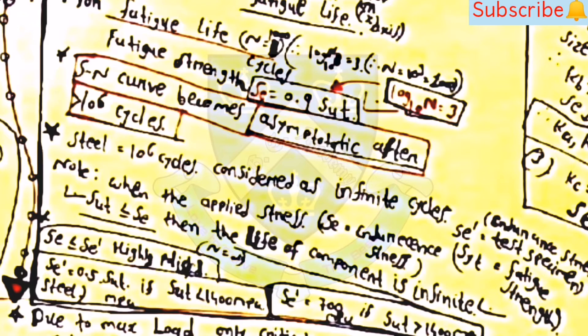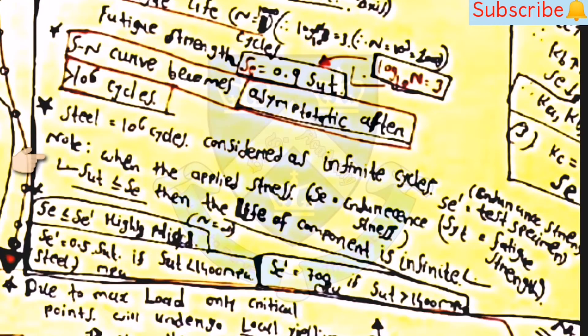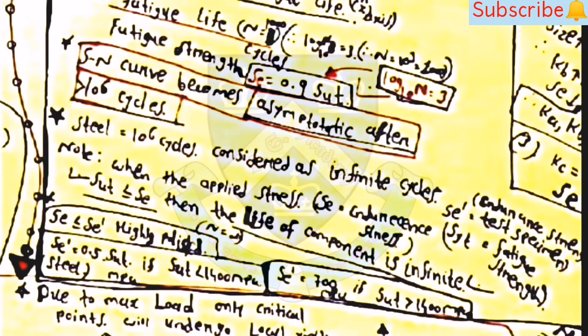The S-N curve becomes asymptotic after N is greater than 10^6 cycles. When the applied stress Sigma is less than or equal to S_e, the life of the component is infinite. S_e is less than or equal to S_e'. S_e' equals 0.5 × S_ut if S_ut is less than 1400 MPa. If S_ut is greater than 1400 MPa, then S_e' equals 700 MPa.